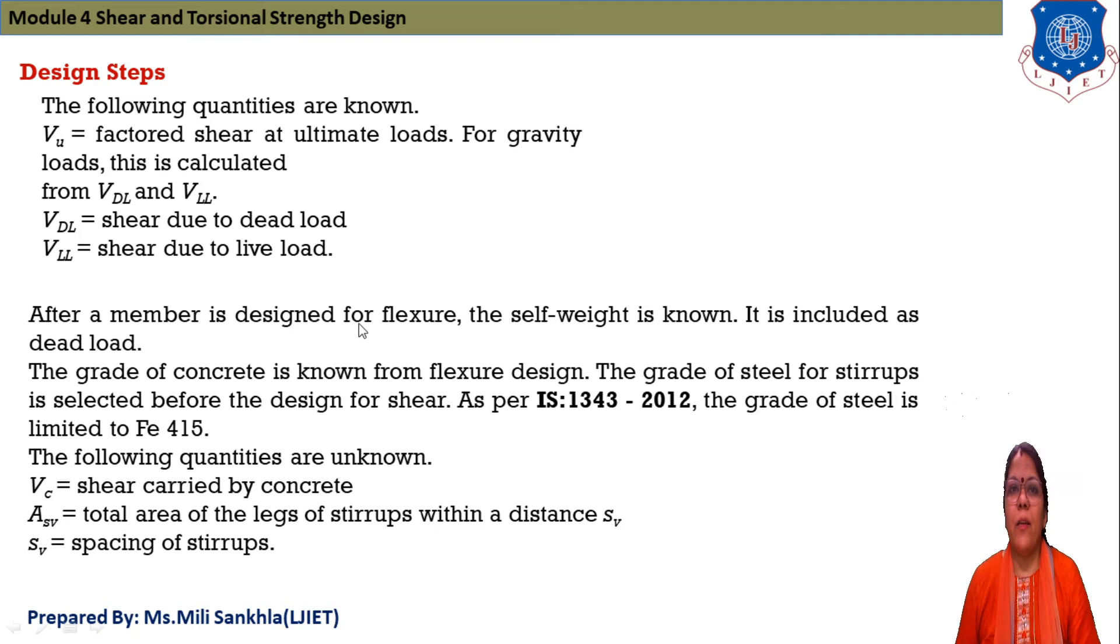After member is designed as flexure, self-weight is known and it is included as dead load. Grade of concrete is known from flexure design. Grade of steel for stirrups is selected before design for shear as per IS-1343-2012 and the grade of steel is limited to FE-415. The following quantities are also known: VC shear capacity of concrete, ASV is the area of stirrups, and SV is the spacing of stirrups.